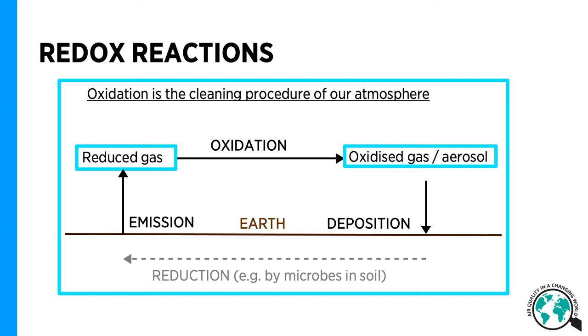An oxidant is then a chemical species with a desire to obtain more electrons. Examples are the OH radical, ozone, and nitrate radical. And a reducing agent is a chemical species with a desire to get rid of electrons.